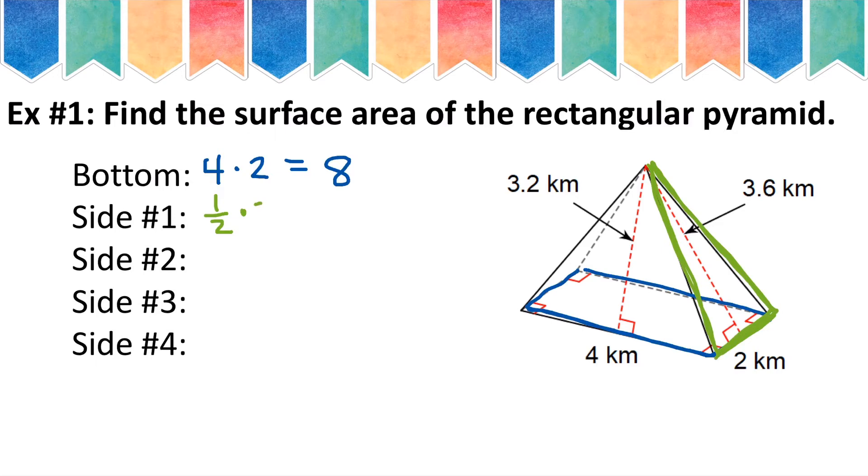my base is 2, and my height is 3.6. So 1 half times 2 times 3.6 makes 3.6.